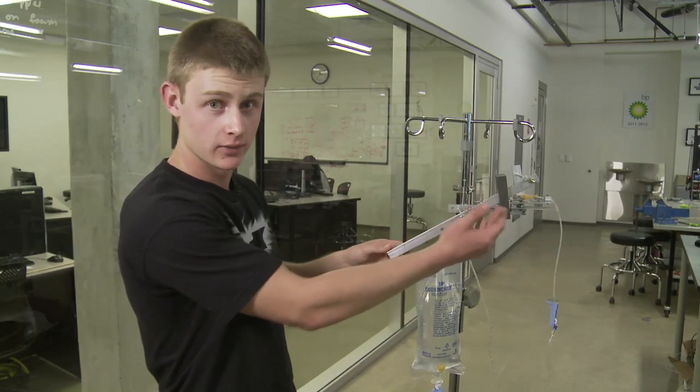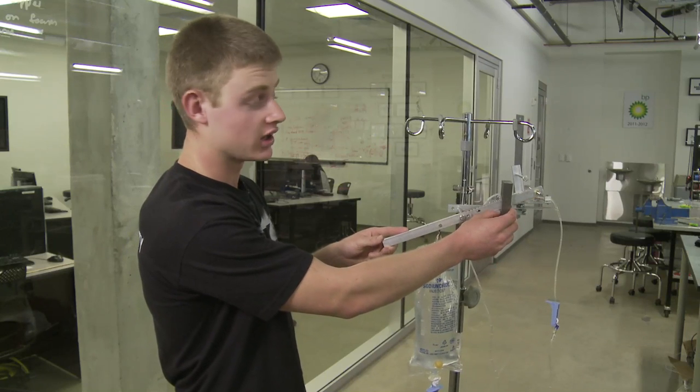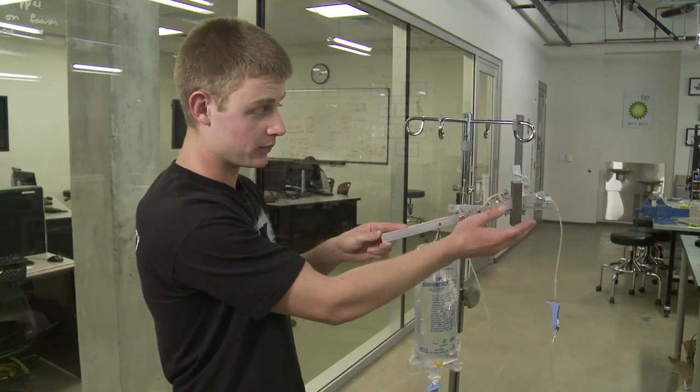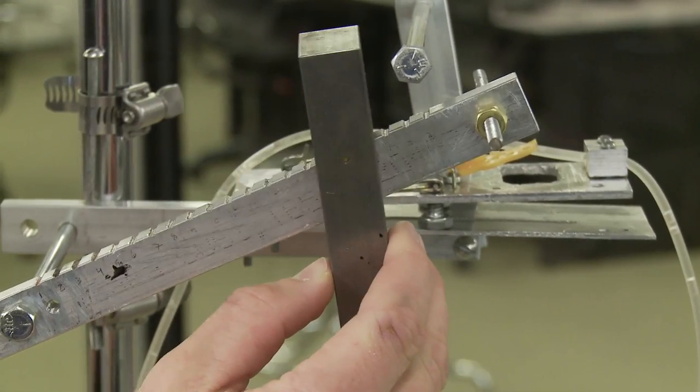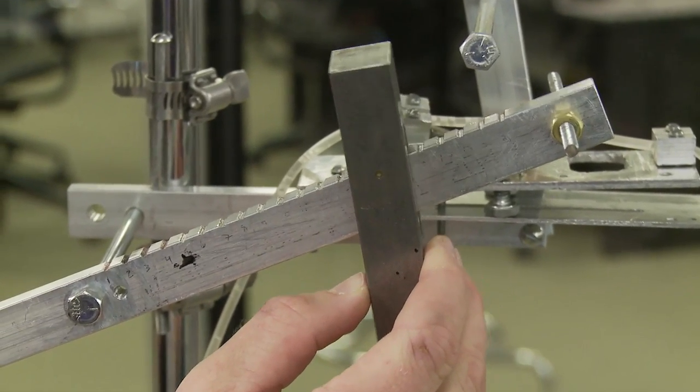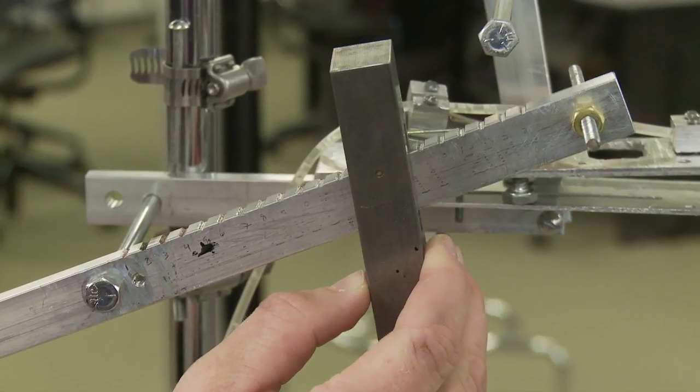Then they would set the scale. They do this by taking the counterweight and moving it outwards until they find the point at which the scale just barely balances, then they move the counterweight one notch inwards for every 50 milliliters they'd like to dispense. So that was three notches, 150 milliliters.